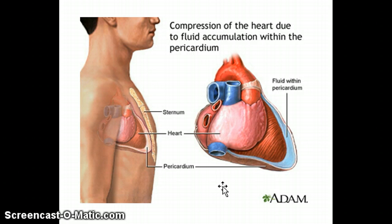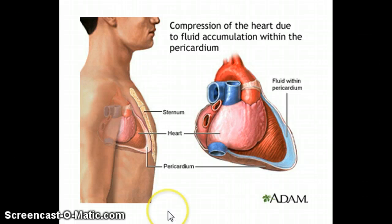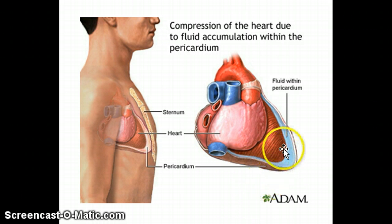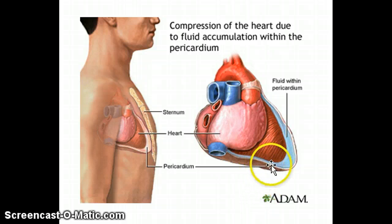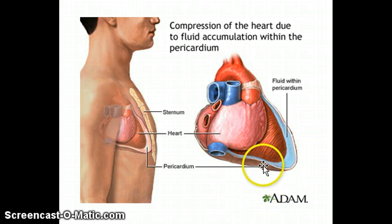Inflammation of the pericardium is called pericarditis, and there are various reasons why that would happen. Pericardial effusion is an abnormal accumulation of fluid in the pericardial sac, in the pericardial cavity. Cardiac tamponade is the term for pressure being placed on the heart because of pericardial effusion. All of this fluid around the heart puts pressure on the heart, causing the ventricles to not fill correctly, so less blood is pumped out — it's a domino effect.